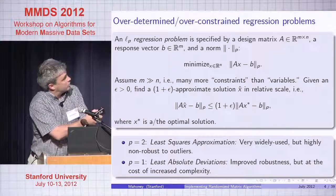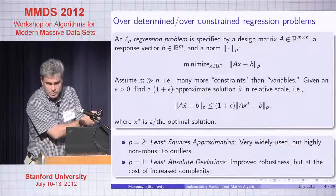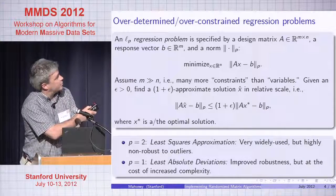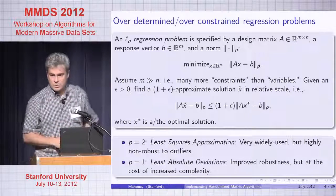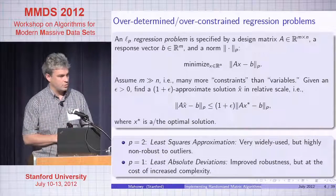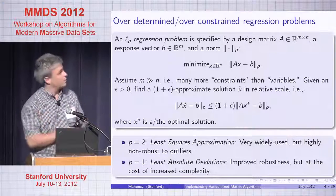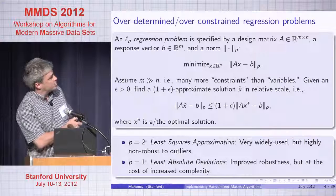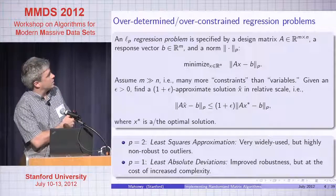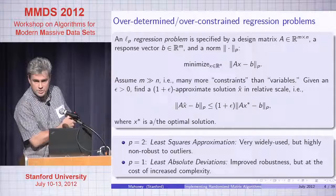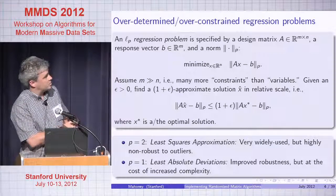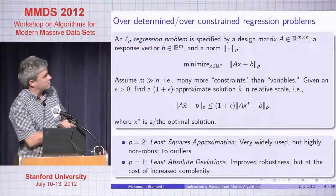You have a matrix A that is tall, a right-hand side vector B, and a norm — a p-norm. The two-norm and one-norm will be our examples. Say M is much larger than N: many more constraints than variables. Given some epsilon — could be 0.1, could be 10 to the minus 10 — you want to find a 1 plus epsilon approximate solution x-hat in relative scale, meaning when you plug x back in, you're within 1 plus epsilon of the optimum.